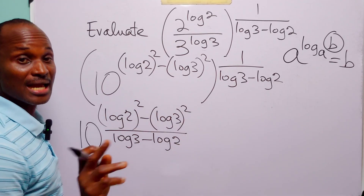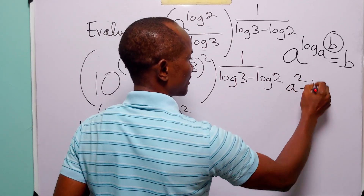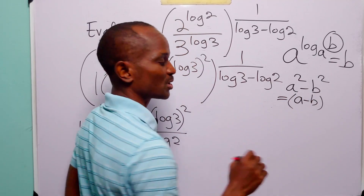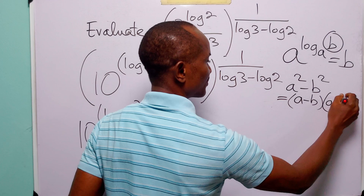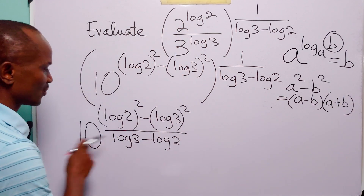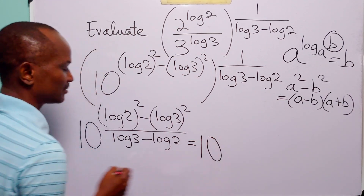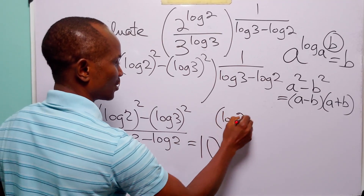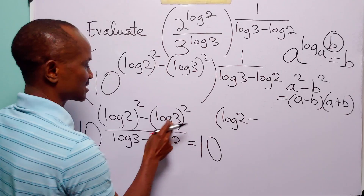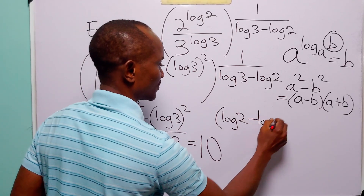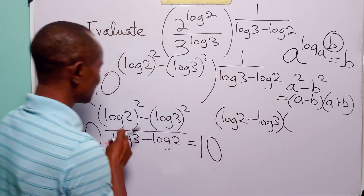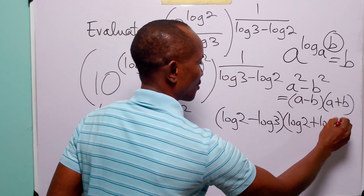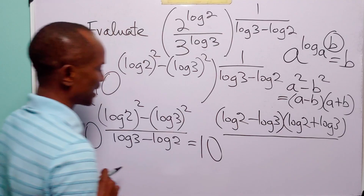Looking at the numerator, we can see the difference of two squares. Remembering that a² minus b² equals (a minus b)(a plus b), we have that this becomes 10 to the power (log 2 minus log 3) multiplied by (log 2 plus log 3), all divided by (log 3 minus log 2).